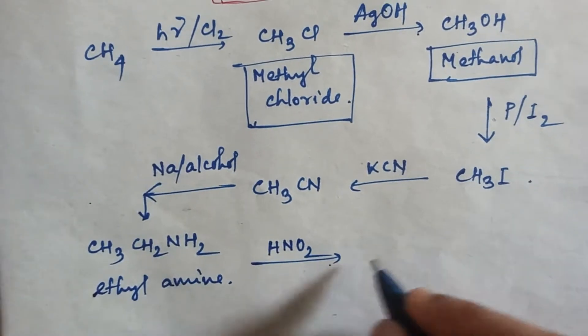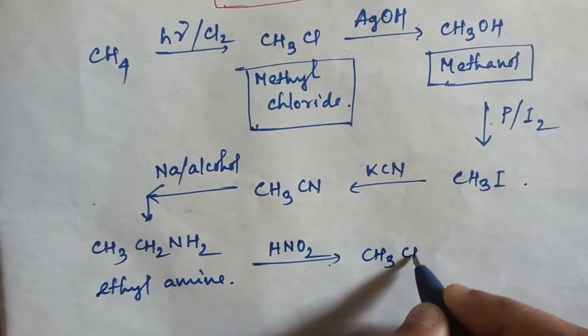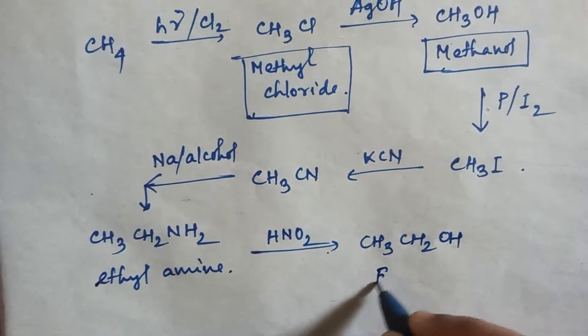Now in ethylamine, if you add nitrous acid, then this amino group will convert into alcohol, so you will get CH3CH2OH, which is ethanol.